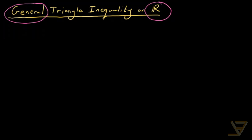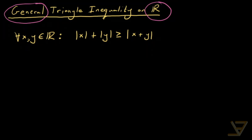Let's start with the most base case, and that's going to form the base case of our induction argument. What it says is that for all x and y in the real numbers, it's true that the absolute value of x plus the absolute value of y is greater than or equal to the absolute value of x plus y, and we want to prove this. We're going to be working backwards, so whatever steps we show, you're going to have to go upwards to formally prove it.